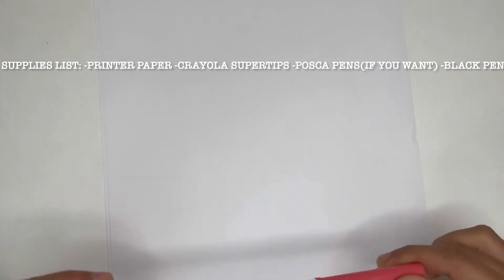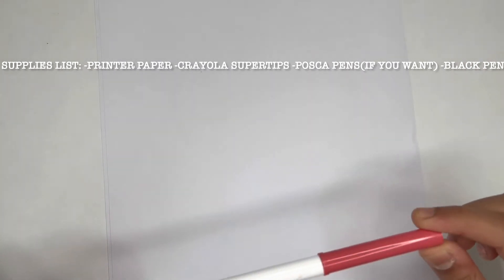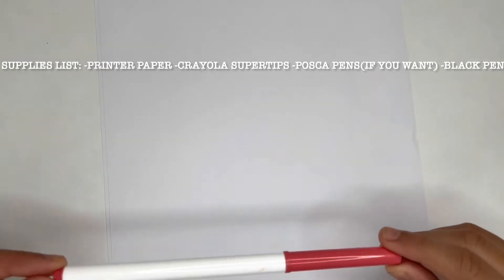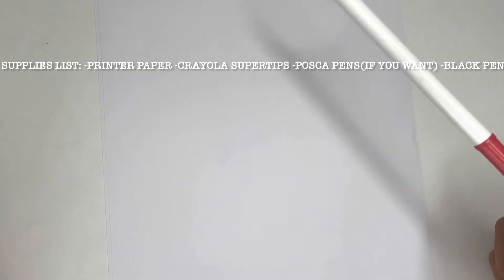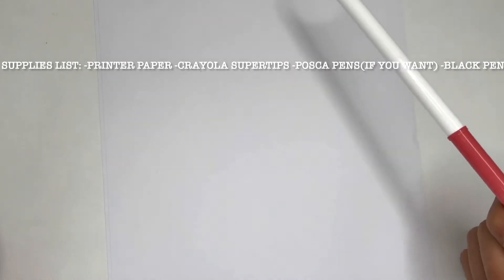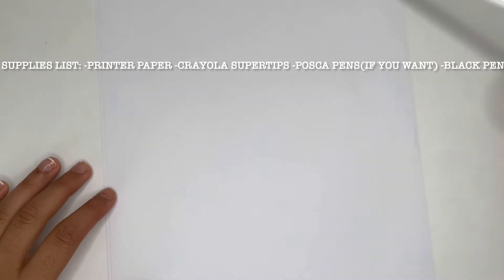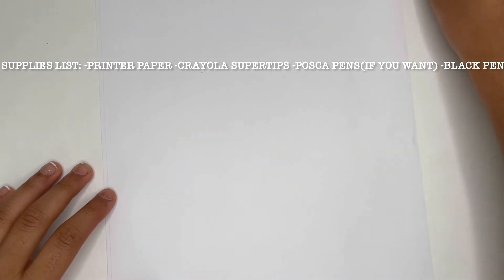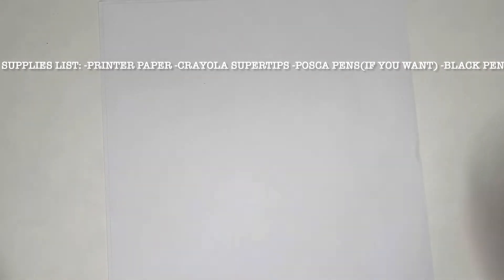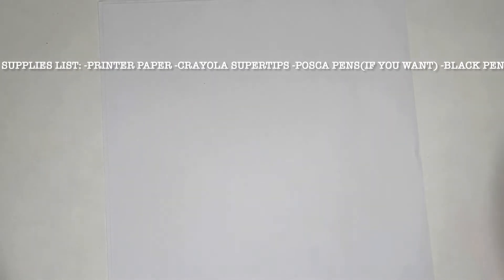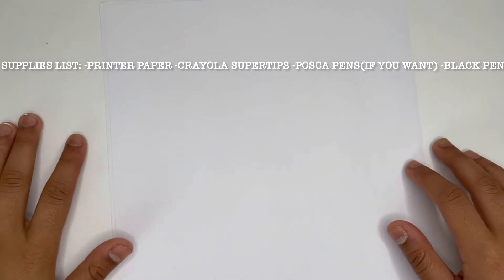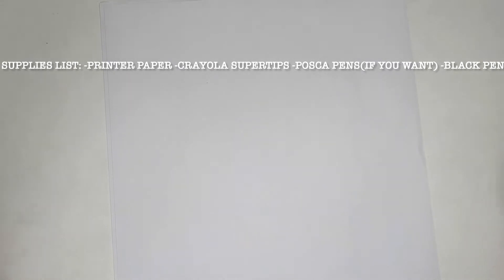Now if you don't have Crayola SuperTips, that's completely okay. Use any markers that you have, just make sure they're a little bit lighter. If you have like the normal Crayola washables, you can use a yellow. These are pretty affordable. You can get a 24 pack, I got the 100 pack for like 16 something dollars, and I'll be sure to link them down below.